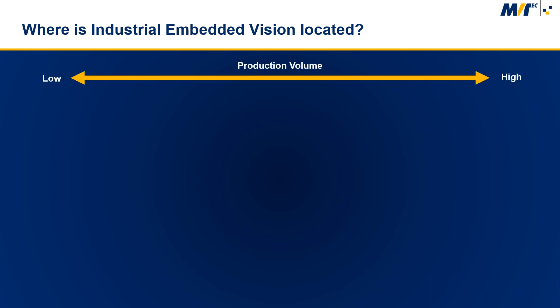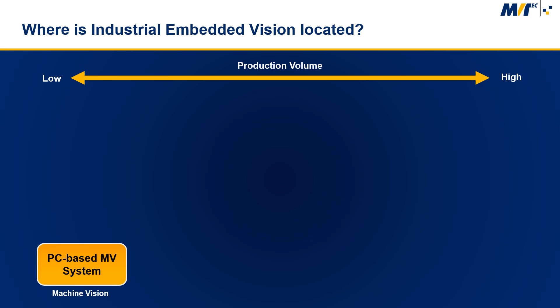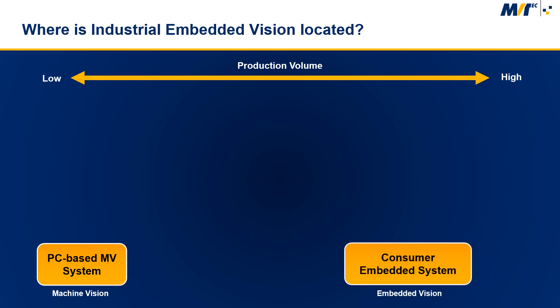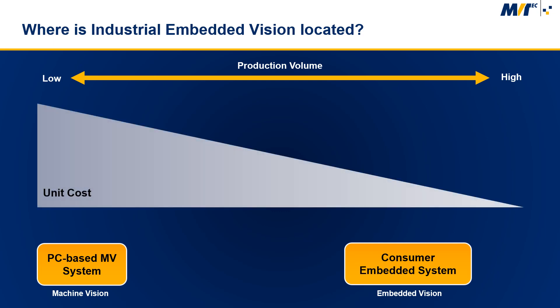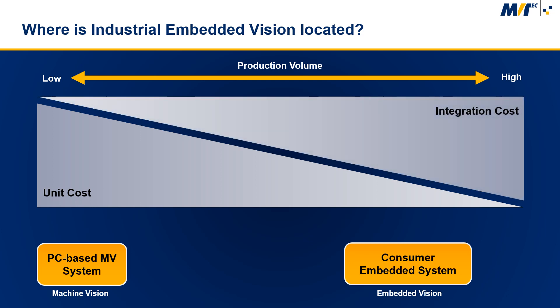On a scale of one to millions units production volume, where is the sweet spot for embedded vision systems? Low volumes are typically served by PC-based machine vision systems, while high volumes — such as consumer embedded systems like a robotic hoover — are at the other end. There is also a very big unit cost difference: in low volumes it's not unusual to have $5,000 as a complete cost for a PC system with hardware and software, while for consumer products you are in single-digit euro cost for a small camera module and computing unit.